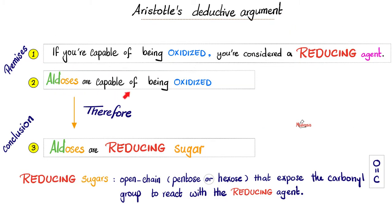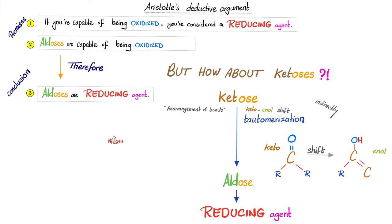All those sugars can be oxidized, therefore they are reducing someone else — what do you call them? Reducing sugars. Why? Because reducing sugars have open chains that expose the carbonyl group to react with the reducing agent, such as the Tollens reagent or the Benedict reagent. How about ketoses? Well, ketoses — only through the process of tautomerization — are capable of giving you the aldose form, and therefore are reducing agents too. You need this keto-enol shift in order for them to become reducing sugars.